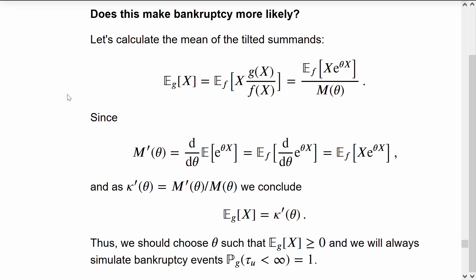And we can simplify this even further by noting that the derivative of the cumulant generating function, that is just the derivative of the log of the moment generating function. Using the chain rule, we can see that that's exactly what we have on the right here.